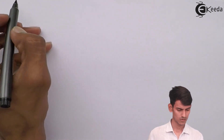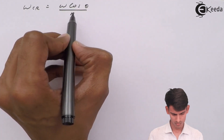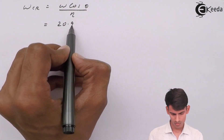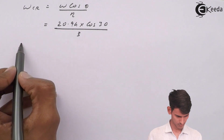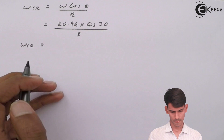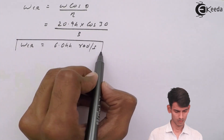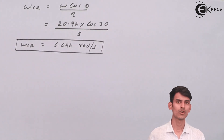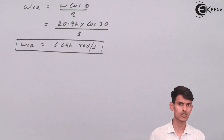The next term is to calculate omega of connecting rod, that is angular velocity of connecting rod. The angular velocity of connecting rod is 6.044 radians per second. Now the last term is angular acceleration of connecting rod.